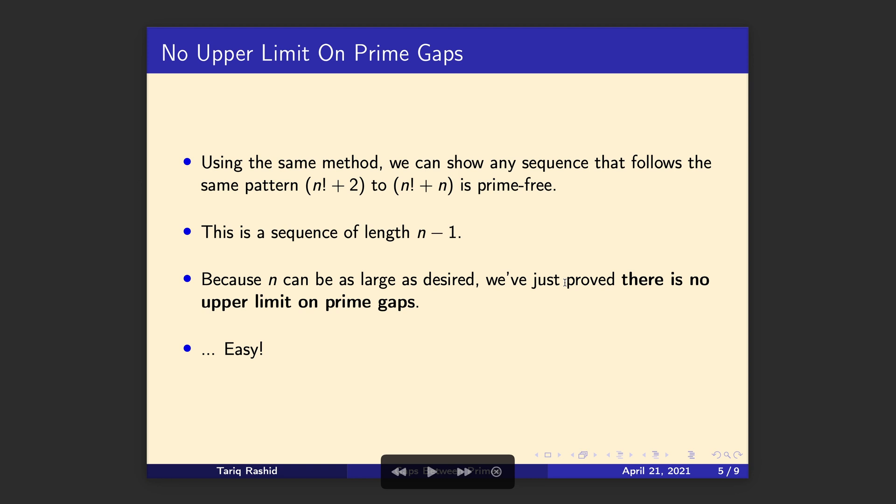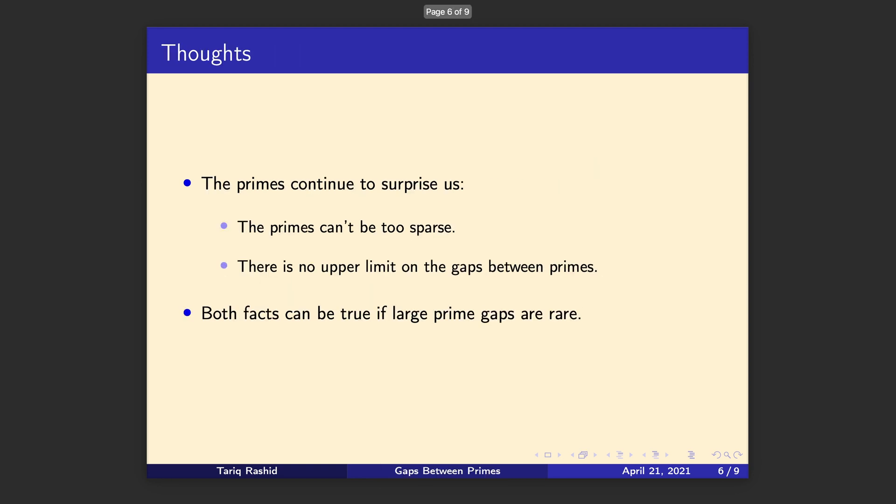We can think about that now a little bit. What's the meaning of this? What can we interpret from this? So we started by saying that the primes can't be too sparse. That's what we started with, and we had good reasons for saying that. But now we've concluded, actually, there's no upper limit on the gaps between primes. Can we reconcile those two facts? We can, as long as the large prime gaps are rare, they need to be rare in order for the average density to catch up. So they can't be common, otherwise the density, which we've already established, 1 over log x, the average will be wrong.